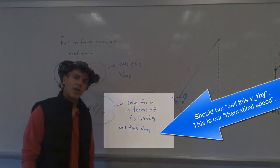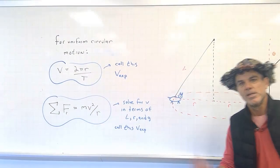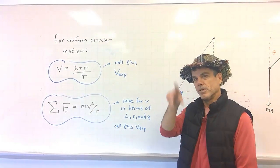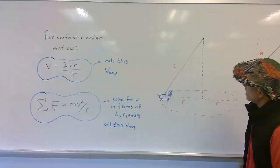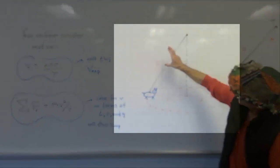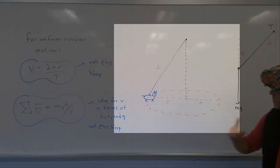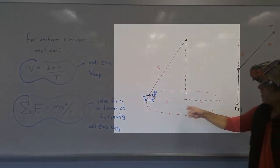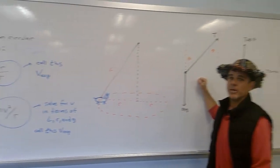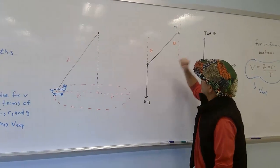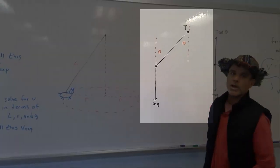We're going to use this equation and Newton's second law — basically sum of the forces equals ma in both the x and y directions — to get a second equation for v. That's just going to be in terms of l, the length of the string, r, the radius of the circular path, and g, the acceleration due to gravity. The setup is we've got the pig connected to a string of length l moving in a circular path of radius r. As he's doing it, there are only two forces acting on the pig: tension in the string and the force of gravity mg.